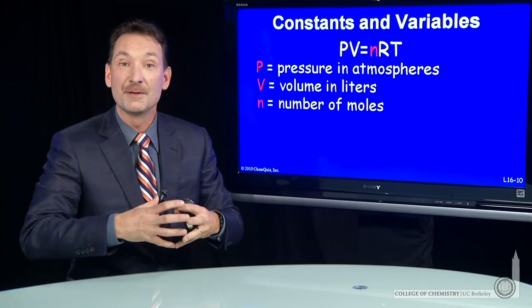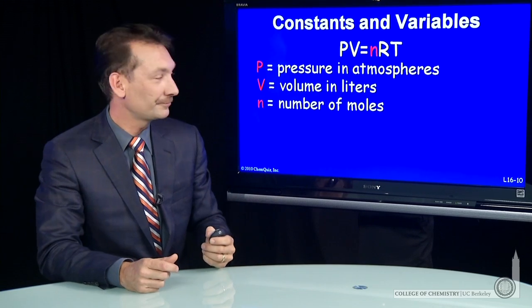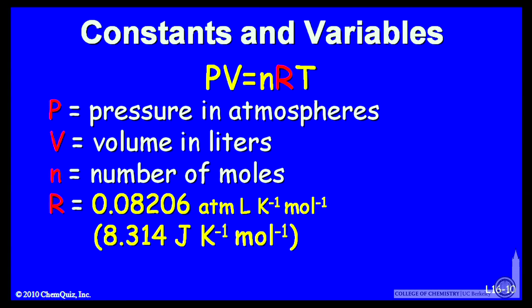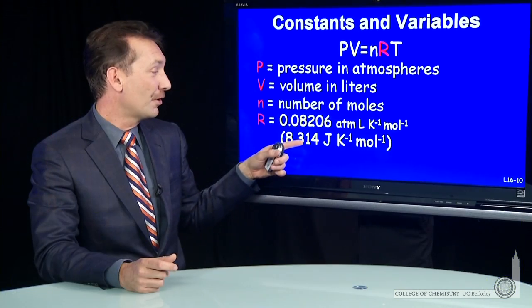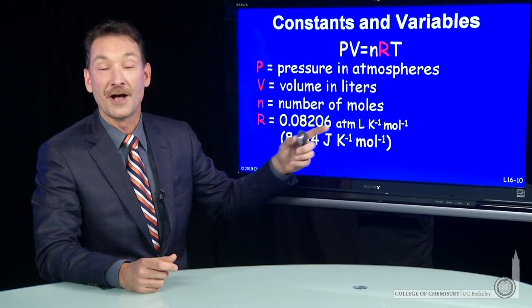More gas gives me bigger volume or higher pressure. I can take R, the ideal gas constant, in one of two units. In liter atmospheres, the value is 0.08206 liter atmospheres per mole Kelvin. Or I can take it in joules, 8.314 joules per Kelvin mole.